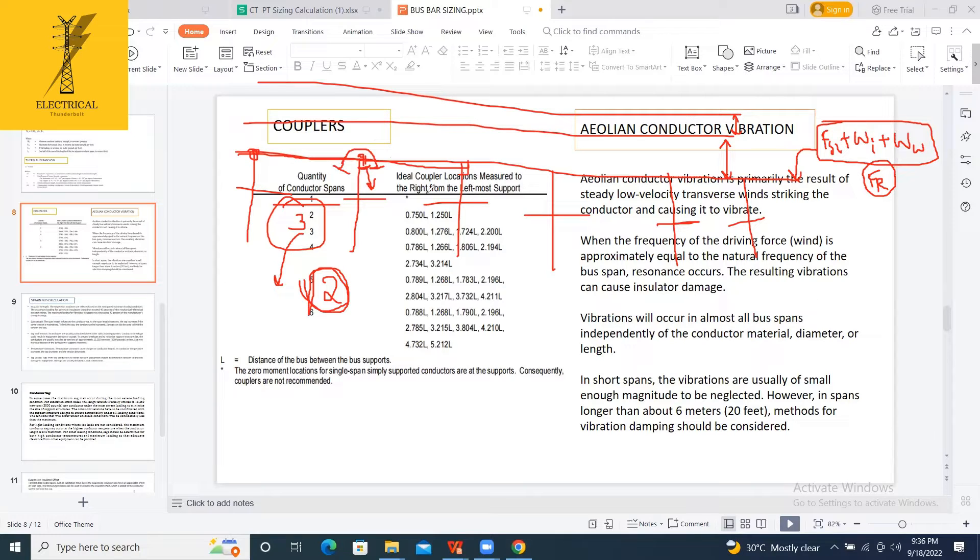And then, if due to some conditions, there might be chances that the natural frequency of the bus and the frequency outside can match. And this leads to, due to some winds, whatever it may be, this may lead to resonance and the insulators will be damaged. To avoid this, I have to place vibration dampers.